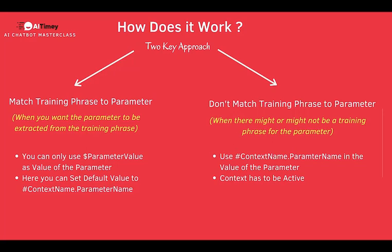There are two key things that come up with experience. When you're matching a training phrase to a parameter — for example, 'I want to buy size S cloth' — the size or 'small' will be caught by the entity and go into a parameter. Whenever you are catching things from a training phrase, you must remember: you can only use dollar parameter_value as the value of that parameter. You can't use hashtag context dot name since you are actively collecting that parameter.